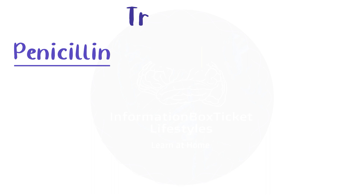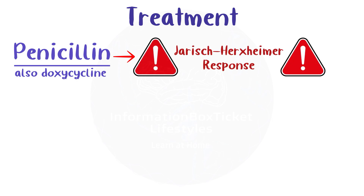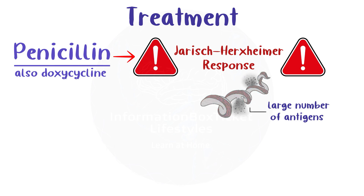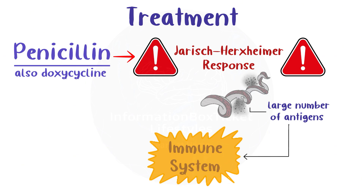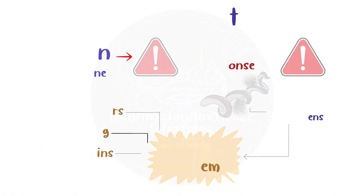Penicillin is the primary therapy for syphilis, while doxycycline may also be helpful in certain circumstances. However, when taking penicillin, it's crucial to be aware of the possibility of a Jarisch-Herxheimer response, in which spirochetes rupture and release a large number of antigens at once, stimulating the immune system to overreact. When that happens, it results in sudden fevers, sweating, and muscle and joint pains that may last for a few hours up to a few days.